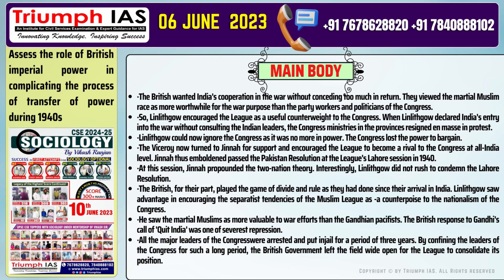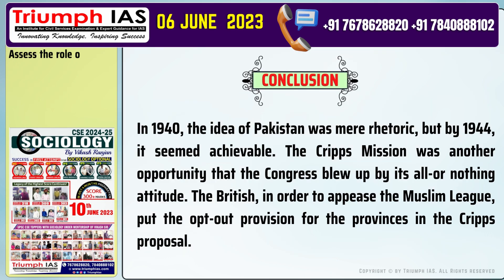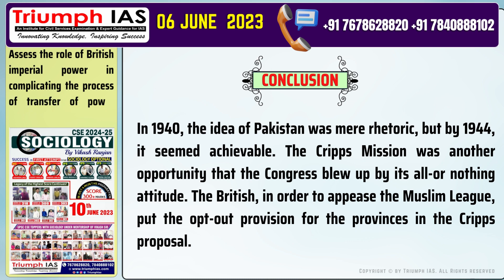Point 8: All the major leaders of the Congress were arrested and put in jail for a period of three years. By confining the leaders of the Congress for such a long period, the British government left the field wide open for the League to consolidate its position. Conclusion: In 1940, the idea of Pakistan was mere rhetoric, but by 1944, it seemed achievable. The Cripps Mission was another opportunity that the Congress blew up by its all-or-nothing attitude. The British, in order to appease the Muslim League, put the opt-out provision for the provinces in the Cripps proposal.